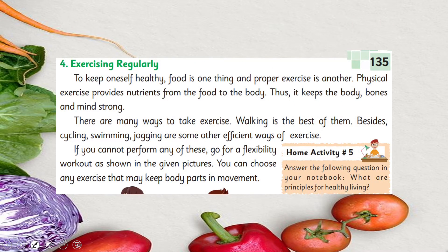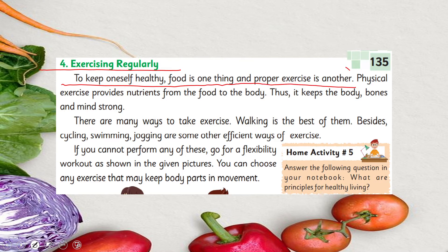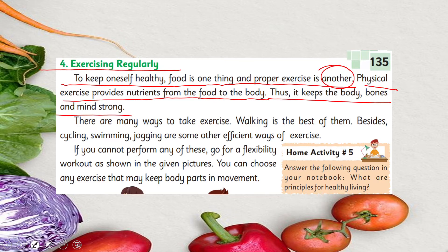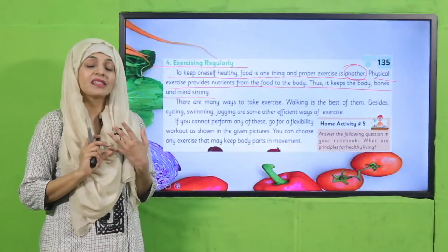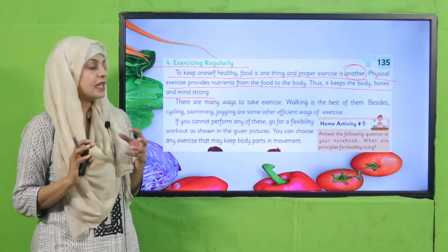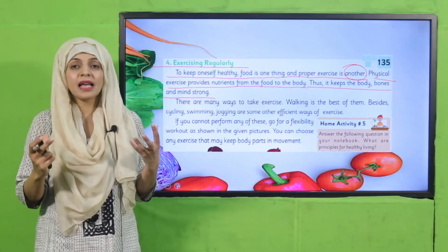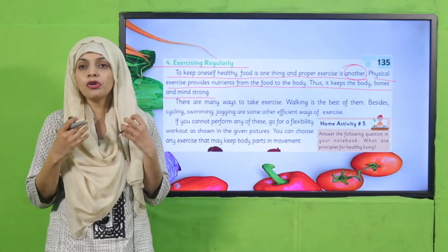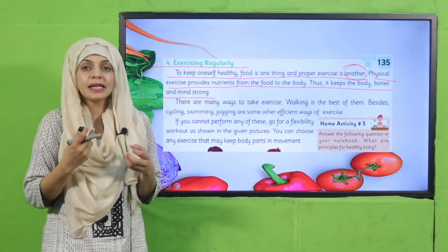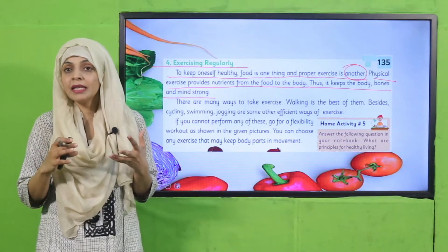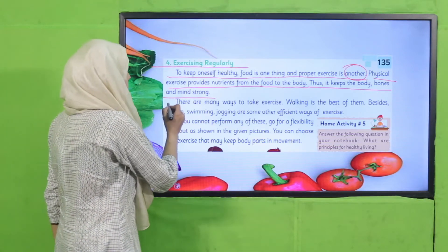On page number 135, number 4 is exercising regularly, which is very important to keep oneself healthy. Food is one thing and proper exercise is another. Physical exercise provides nutrients from the food to the body, thus it keeps the body, bones, and mind strong. Jaise aapke liye balanced diet bahut zaroori hai, isi tarah physical activity ya proper exercise bhi bahut zaroori hai. Jab aap exercise karte hain, jo food aap intake karte hain usse important nutrients jo hain wo aapki body ke andar instantly break down hote hain, aur is tarike se aap healthy aur active rehte hain.